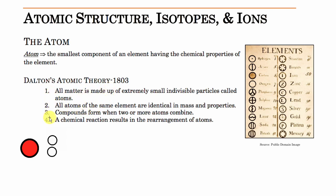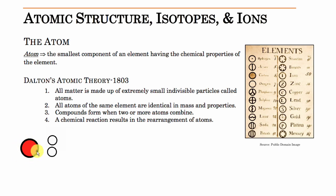He has four postulates to his atomic theory. The first one was that all matter is made up of extremely small indivisible particles called atoms. He thought of them as little tiny spheres that were impossible to break down — you could take something and keep breaking it in half until you got down to this little tiny indivisible, undividable particle called the atom.